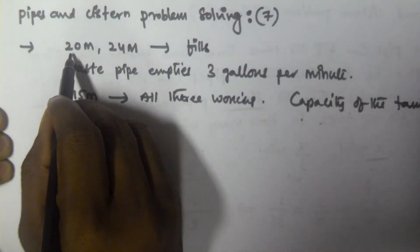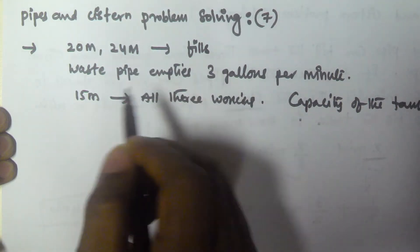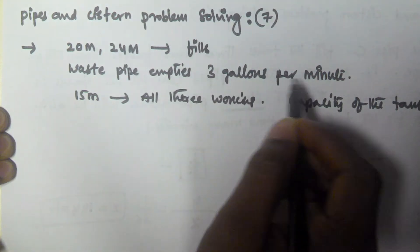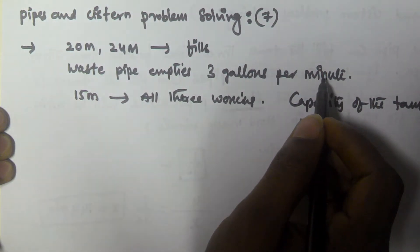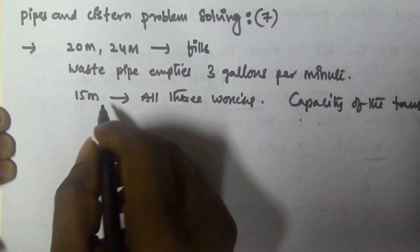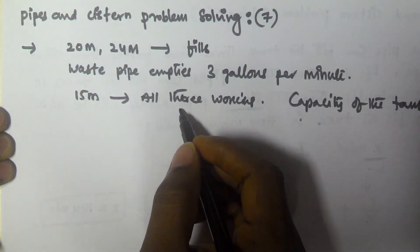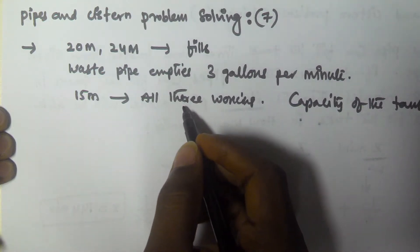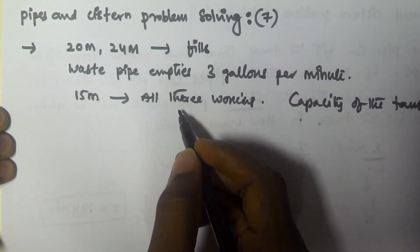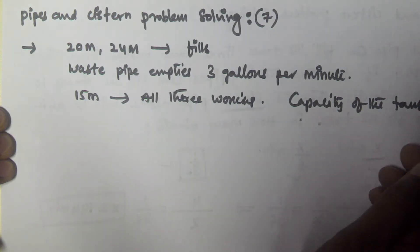So, the first pipe takes 20 minutes to fill the tank, the second pipe takes 24 minutes, and the waste pipe empties 3 gallons per minute. When all three pipes are open together, they fill the tank in 15 minutes. We need to find the capacity of the tank.